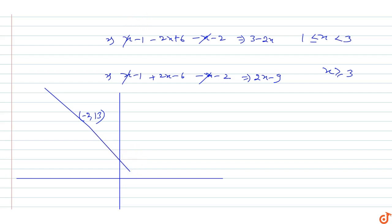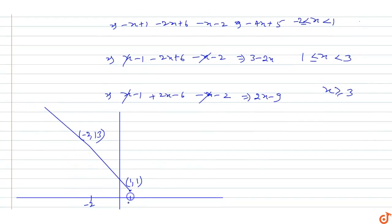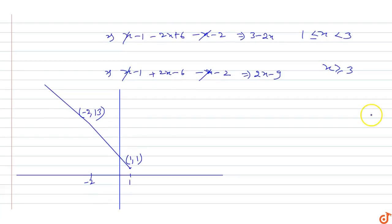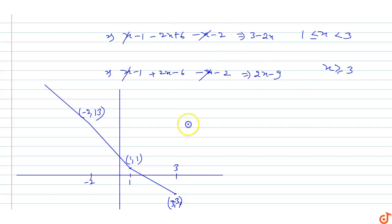At x = 1, y = 1. From 1 to 3, f(x) = 3 minus 2x. At x = 1, value is 1; at x = 3, value is minus 3. So the point is (3, minus 3). For x greater than 3, f(x) = 2x minus 9, which cuts the x-axis at x = 9/2 (i.e., 4.5). So the point (9/2, 0) is on the graph.